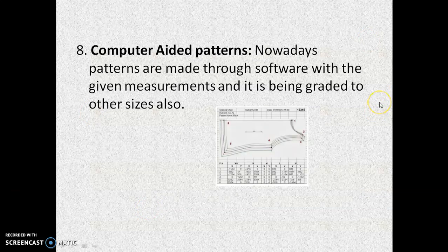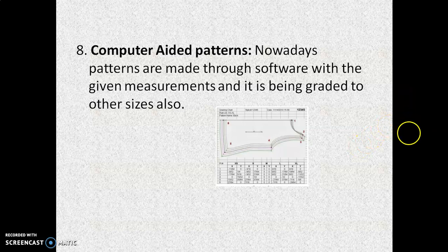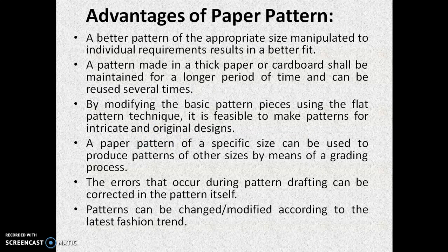Last is the computer-aided pattern. With the advancement of the latest technology, patterns are now made through software with given measurements and can be graded in other sizes as well. Grading ke liye, pattern create ke liye, there are so many pattern-making softwares available nowadays. It is very easy and also very accurate to create patterns through the computer system, and grading can be done at the same time on the computer itself. Softwares like ReachCat, TukaCat, and OptiTex are available for computer-aided pattern creation. So these are all the types of paper pattern.